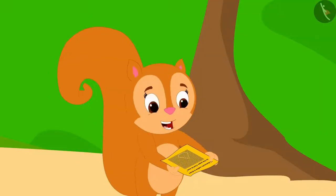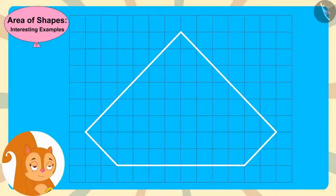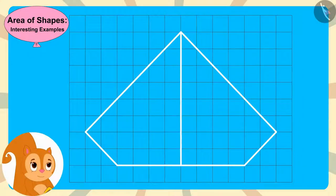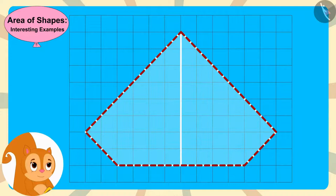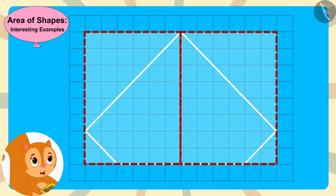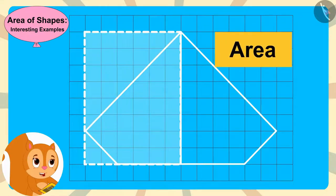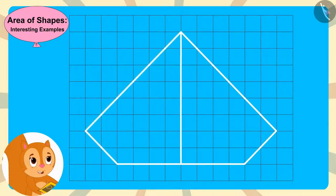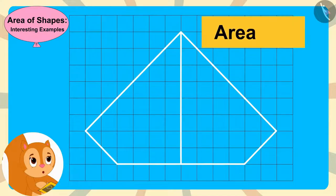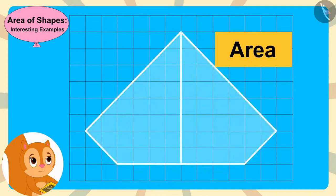Chanda got excited. This diamond's outline is made of two equal parts, thought Chanda. Chanda then drew a vertical line inside the outline of the diamond. Because this diamond is made of two equal parts, if she were to find only the area of one part, she would multiply it by two to find the area of the entire diamond.